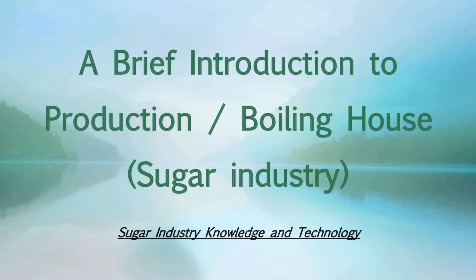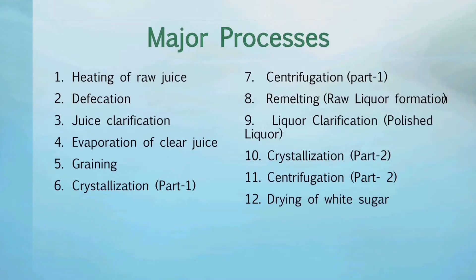Sometimes it is also called the boiling house. In this video, I will explain the general concepts of how sugar is made after the juice has been extracted from sugar cane. It should be noted that the maximum of the processes for the production of white sugar in a sugar industry are physical in nature. Now, move towards today's topic. After the extraction of juice, the juice is subjected to pass through various processes to get white sugar.